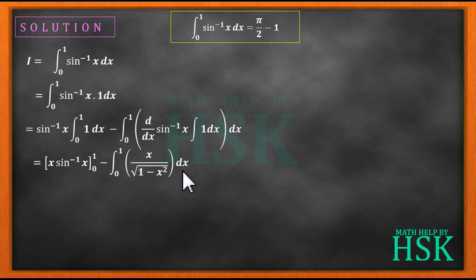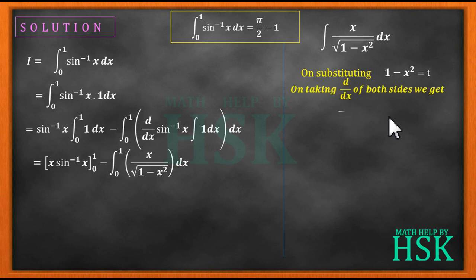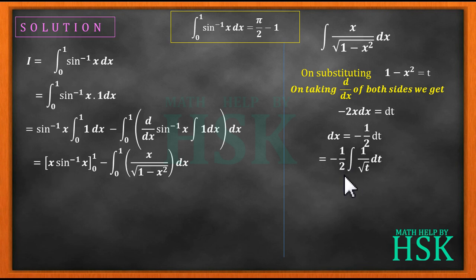Taking this as an indefinite integral and performing substitution, I assume 1 minus x square is equal to t. Differentiating both sides with respect to x gives minus 2x dx equals dt, or dx equals minus 1 by 2 dt.